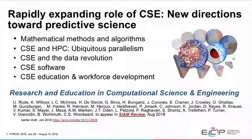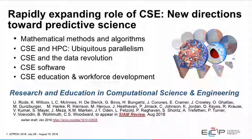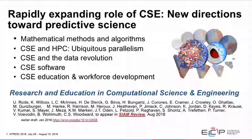Computational science and engineering is really expanding in a lot of new directions. There's an article about to be released in SIAM Review this month talking about how this field is continually evolving mathematical models and algorithms as compute resources become more and more capable. The kinds of physics we can solve become more and more complex, and we're able to tackle problems now that we could only dream of 15 years ago. Going forward, this is causing a new revolution in the kinds of multi-physics algorithms we can think about.